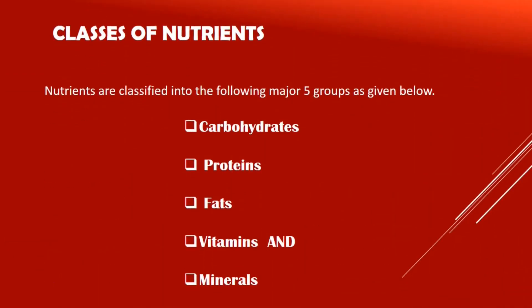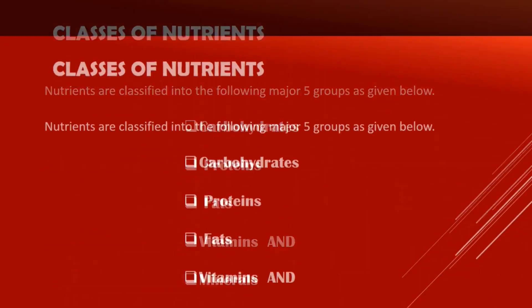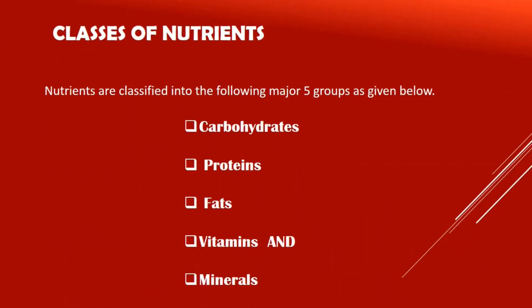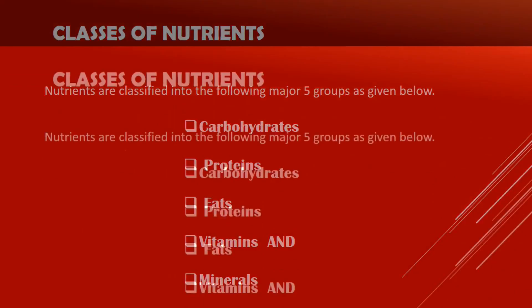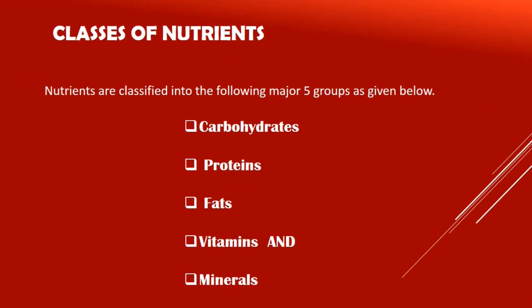Classifications of nutrients. Nutrients are classified into the following five major categories: carbohydrates, proteins, fats, vitamins, and minerals.